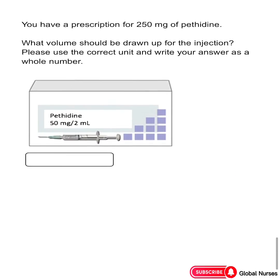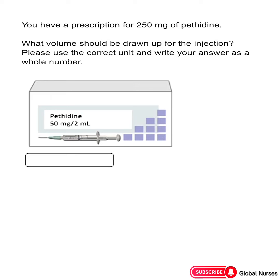Question nine: you have a prescription for 250 mg of pethidine. What volume should be drawn up for the injection? Please use the correct unit and write your answer as a whole number. Our prescribed dosage is 250 mg and the stock dose is 50 mg in 2 ml. So it's 250 divided by 50, times 2, giving us 10 ml.